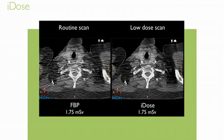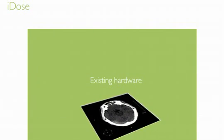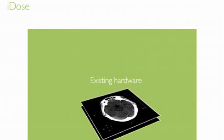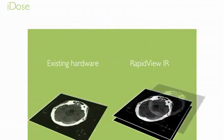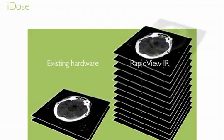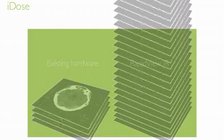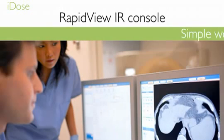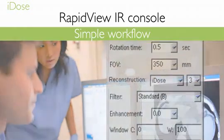Eidos' groundbreaking algorithm delivers these outstanding results. But this algorithm is so computationally intensive that it could not run on existing reconstruction hardware. To satisfy the performance requirements of Eidos, the RapidView IR console was developed. The computational intensity of RapidView IR enables reconstruction times up to 20 images per second, making it practical to use in the real world. Yet the simple workflow makes it easy to incorporate into your existing standard of care.